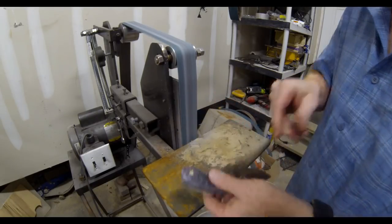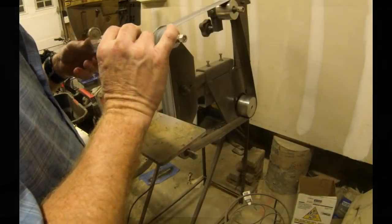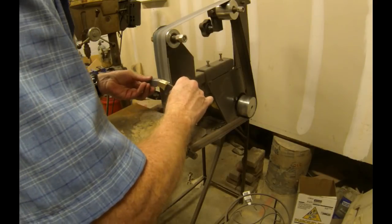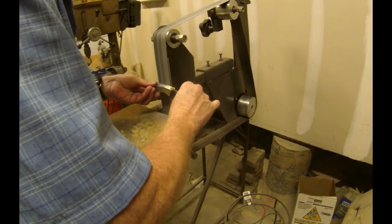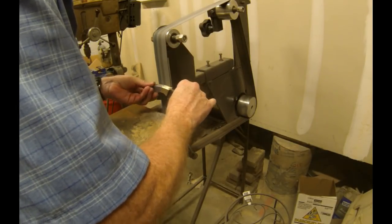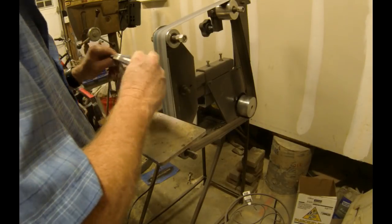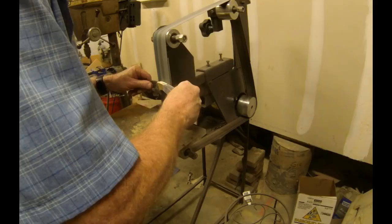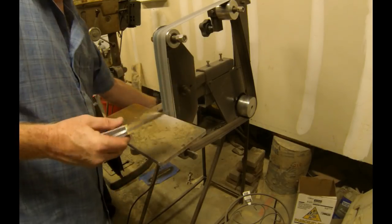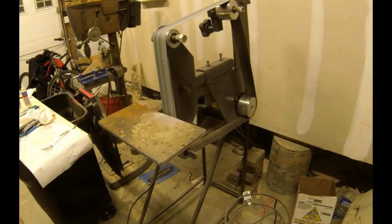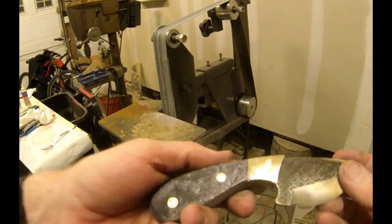This is kind of the fun part because you're beginning to see what the end product is going to look like, starting to see how those sponge micarta scales are going to look, what the finished product is going to look like. I'm going to go back to the two by 72 belt sander and do some finished polishing, finished sanding along both sides of the scales as well as the bolsters. At this point I changed from the heavy grit down to a 120 grit on the belt sander.